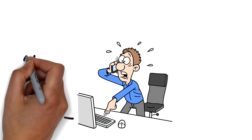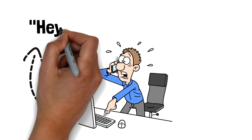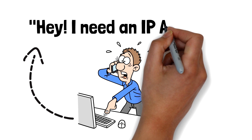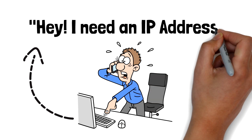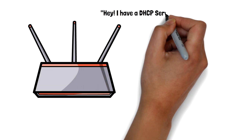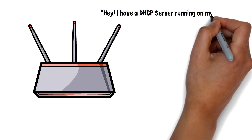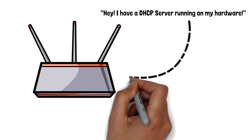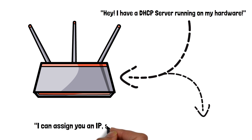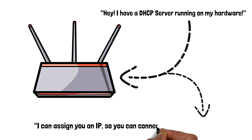In other words, if a new customer tries to connect, their computer broadcasts, "Hey, I need an IP," at which point the router says, "Hey, I have a DHCP server running on my hardware. I can assign you an IP so you can connect and communicate here."